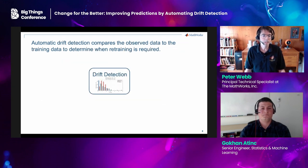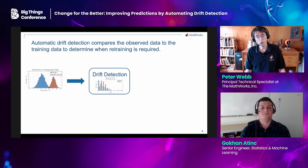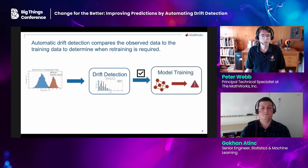One way to know if you need to retrain your model is by analyzing the data your model is processing. Drift detection analyzes the difference between a training set and the observed data. If the difference is significant, the model no longer reflects the real world and retraining is necessary. Then the retrained model needs to be redeployed, of course.